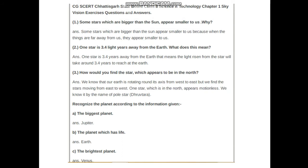Second question: One star is 3.4 light years away from the earth. What does this mean? One star is 3.4 years away from the earth. That means the light rising from the star will take around 3.4 years to reach the earth.